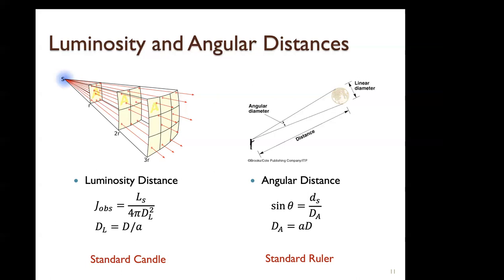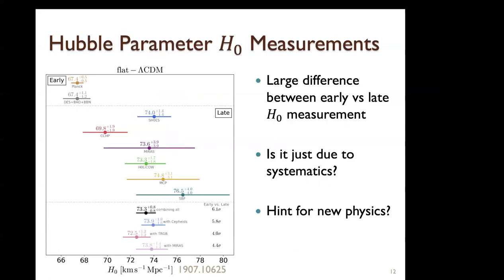Using these two different distance measures, we have measured the Hubble parameter today. Data points from early-time measurements — CMB Planck, BAO, and BBN — use the angular distance, while late-universe measurements use the luminosity distance. Depending on the dataset, there is a four to six sigma tension between early and late universe measurements. This is the famous Hubble tension, which may come from systematics in the late universe, or may be a hint for new physics.